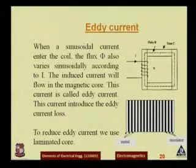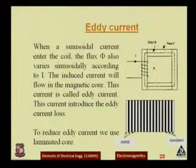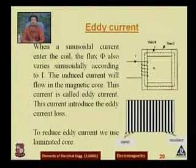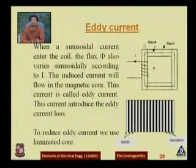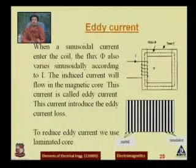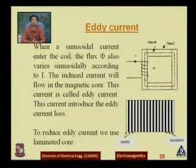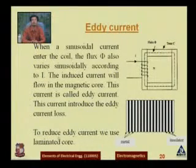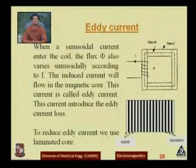Eddy current losses occur when a sinusoidal current enters the coil: the flux phi varies simultaneously according to the induced current, and this induced current flows in the magnetic core — that is the eddy current. To reduce the eddy current loss, a laminated core is used in the transformer, with laminations placed between the metal strips.